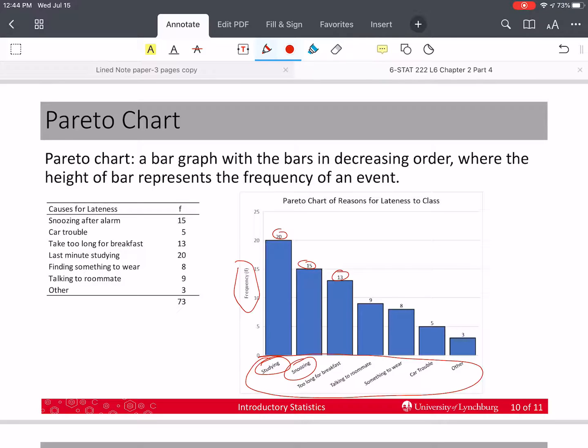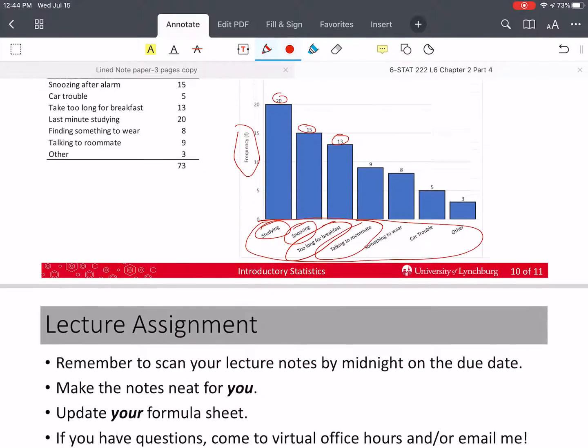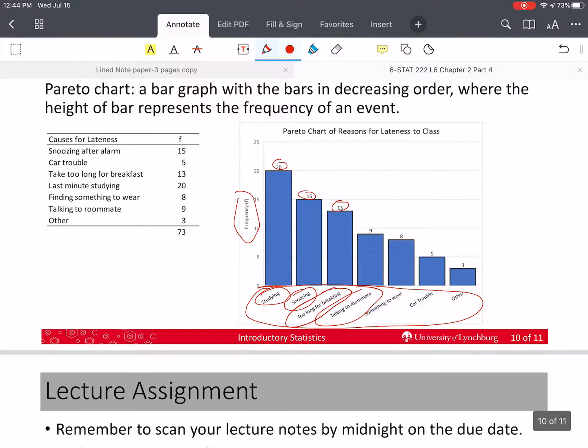And then before that and after that, she would want to tackle snoozing. And what could she do to take less time for breakfast? And then how could she avoid talking to the roommate too long, et cetera? Okay. So she knows the order in which to address these causes of her being late. All right.